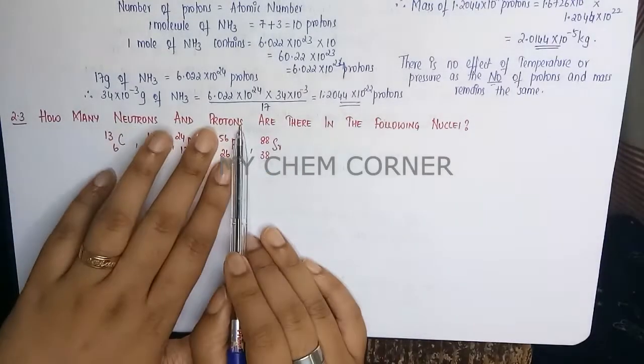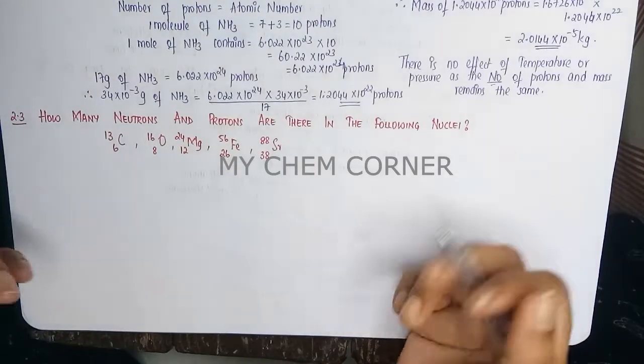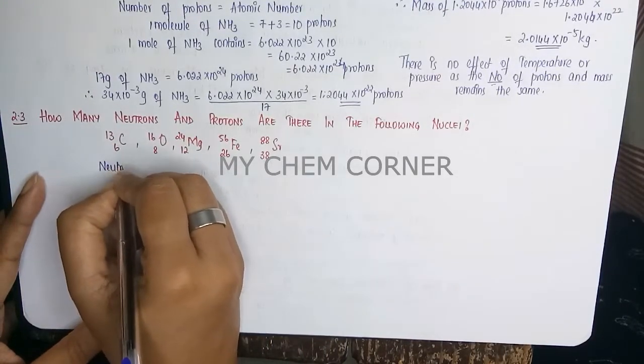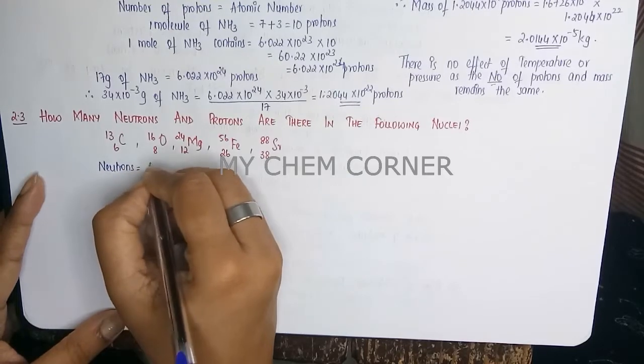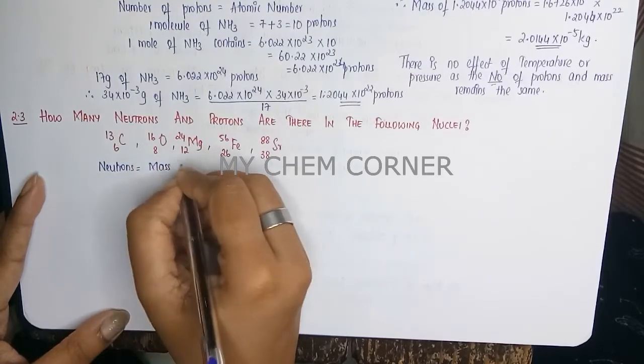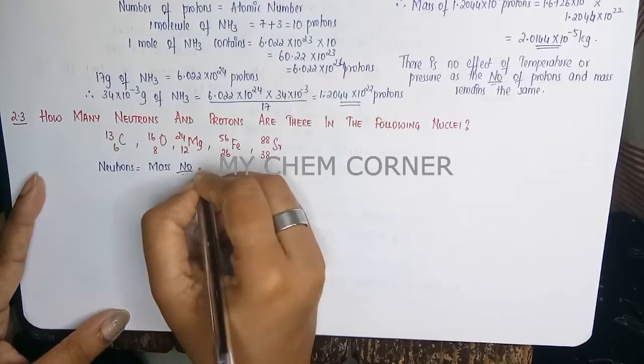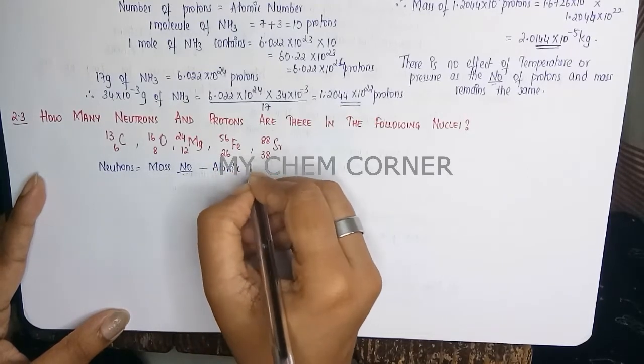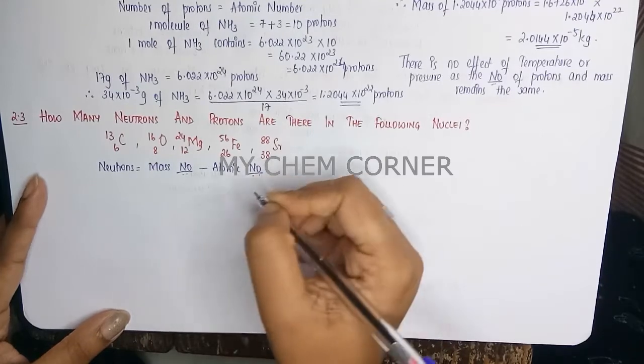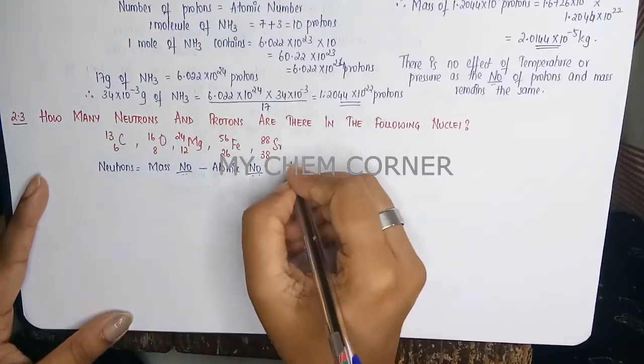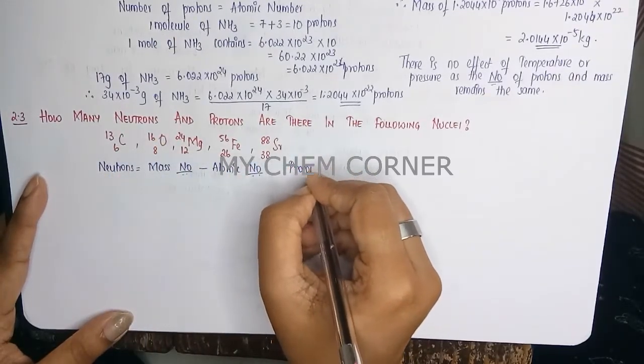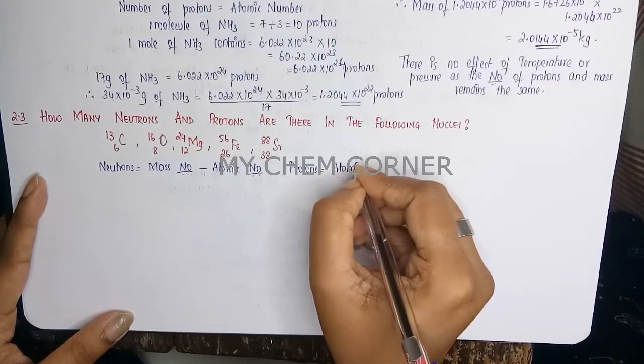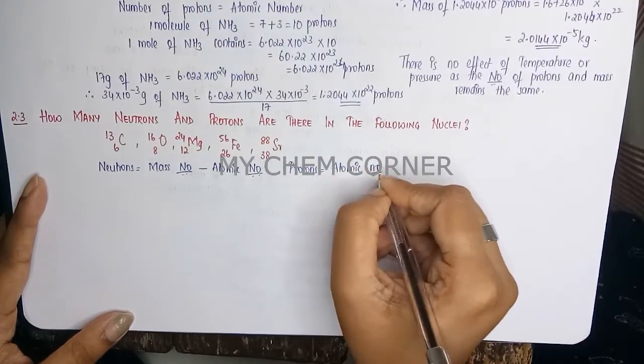Neutron means mass number minus atomic number, and proton means it is the atomic number itself. So now we know what the formula is or what proton and neutron mean.